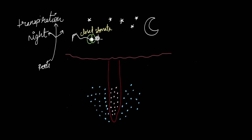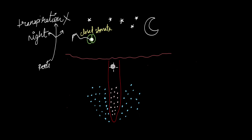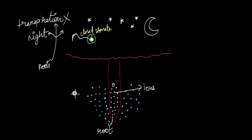But at night, the stomata are closed because there is no need for gas exchange, and transpiration also does not occur. So when transpiration is not occurring and there is no pull drawing water and nutrients up into the plant, the nutrients and water tend to accumulate within the root itself. This creates a concentration gradient — there are more ions and solutes inside the root compared to outside, and more water outside compared to inside.